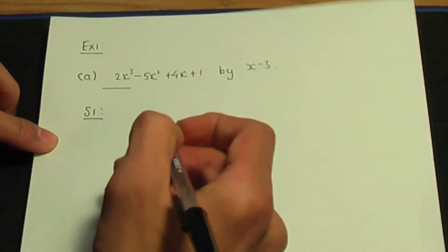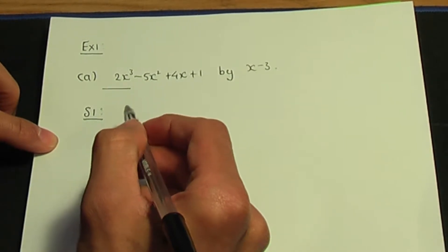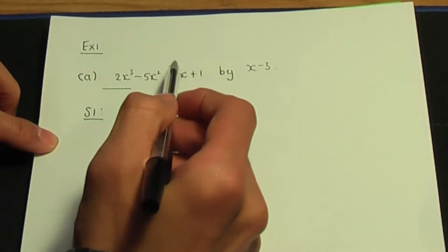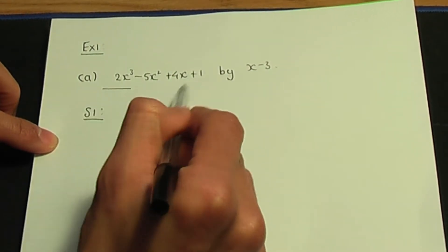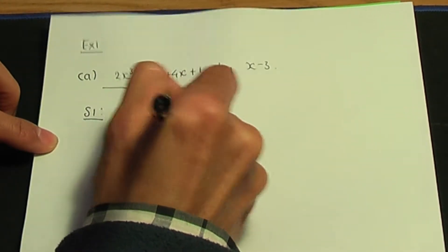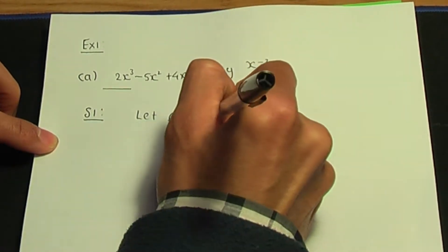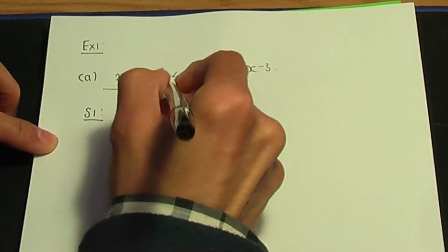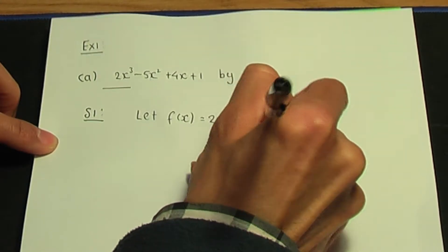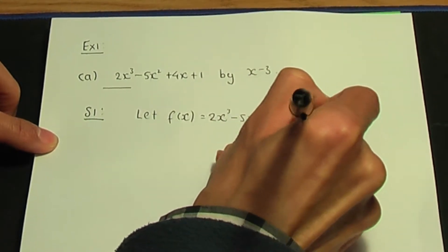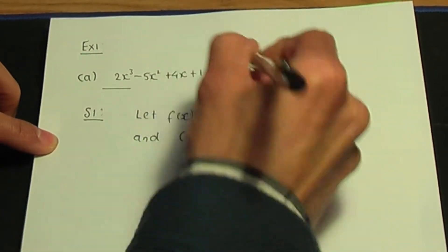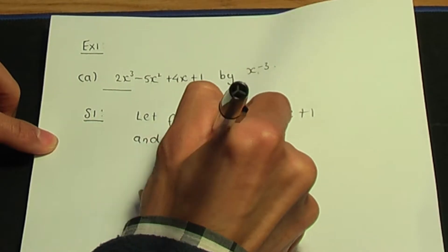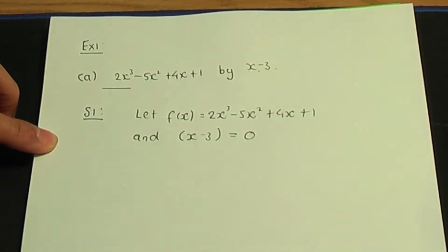Here is step number 1. For the remainder theorem, f(x) is your polynomial. So I let f(x) be my polynomial, which is 2x cubed minus 5x squared plus 4x plus 1. In step 1, I always take the linear — so the linear is x minus 3 — and I equate that to 0 always.